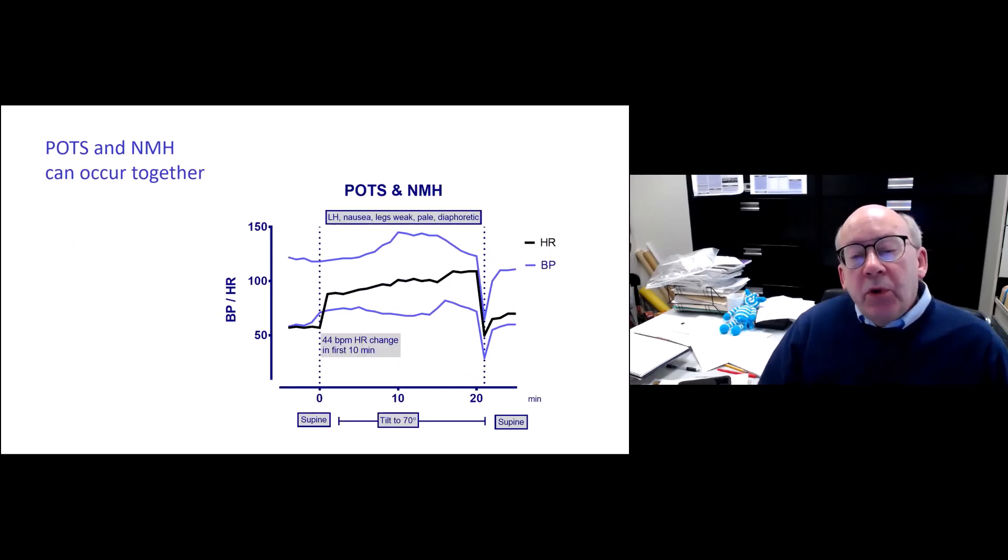Some people talk about POTS as if it's independent of everything else. We find, however, that POTS and neurally mediated hypotension can occur together. So here's somebody who had a 44 beat increase in heart rate in the first 10 minutes of the tilt test, and then at the 20 minute point had the classic vasovagal response of neurally mediated hypotension, all with the reproduction of their typical symptoms. The good thing is that these two conditions occur along a spectrum, and their treatment is almost identical.